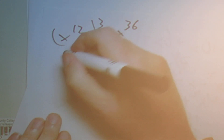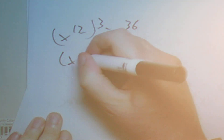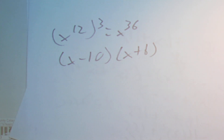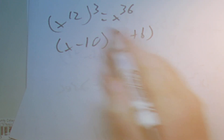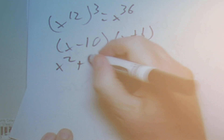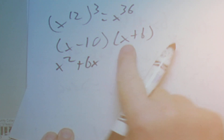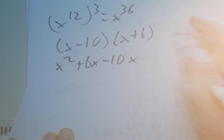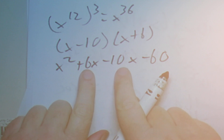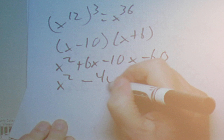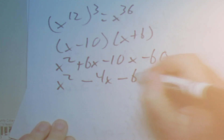Then we have binomials to multiply. Let's say it's x minus 10 times x plus 6. Using FOIL: first, x times x is x squared; outer, x times 6 is plus 6x; inner, negative 10 times x is minus 10x; last, negative 10 times 6 is minus 60. Combining the like terms in the middle gives x squared minus 4x minus 60.